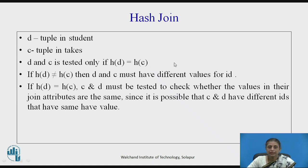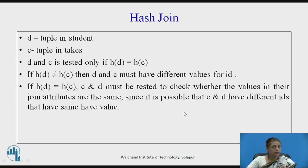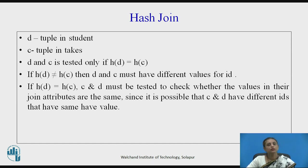For example, if 10 is the id in student and the hash function is mod 10, then its value is 0. Whereas 22 is the value in c, so 22 mod 10 equals 2. Since 0 and 2 are not matching, they will not be tested. If h(d) is not equal to h(c), then d and c must have different values of id. But if the hash value is the same, it does not necessarily mean the join attribute values are the same, so we must check all tuples with the same hash value to verify the actual value is also the same.